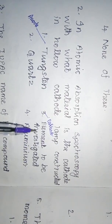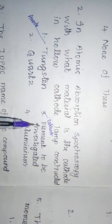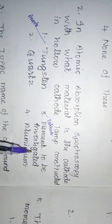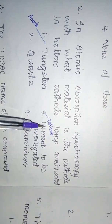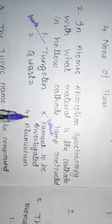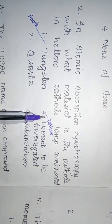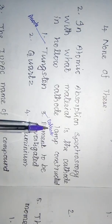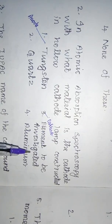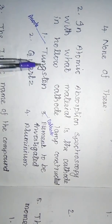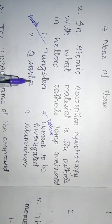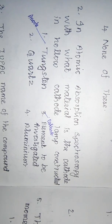The cathode has the element to be investigated coated on it. So the cathode is coated with the element to be investigated, while the anode uses a tungsten filament.